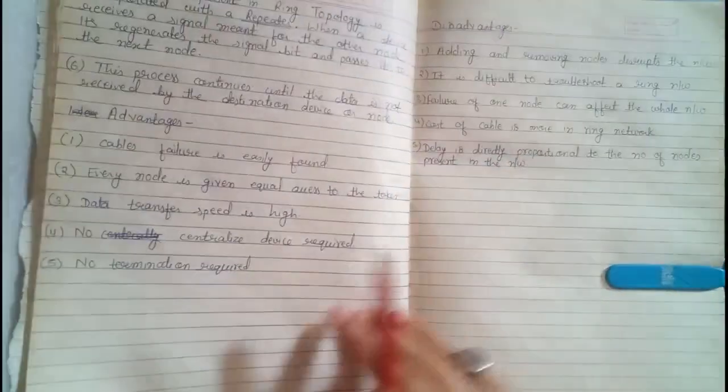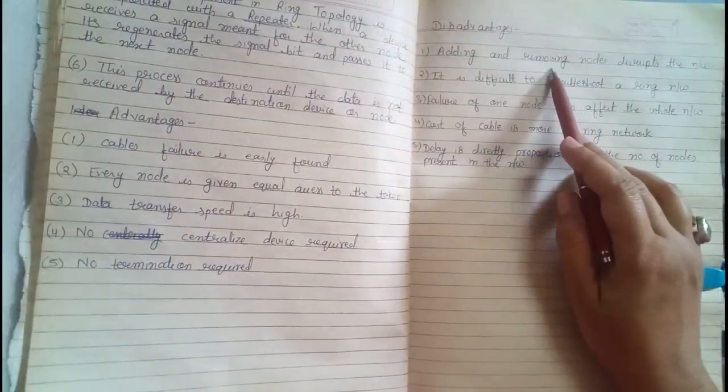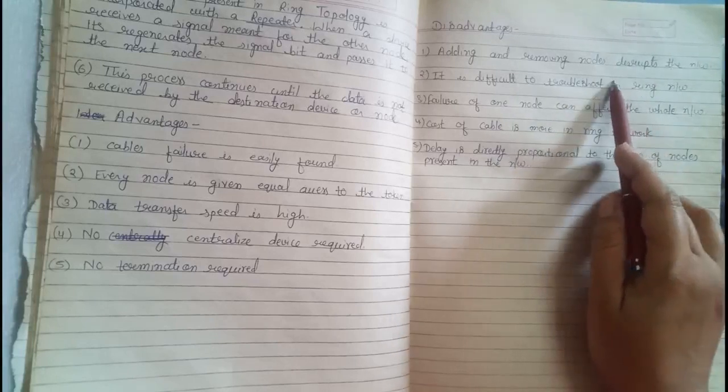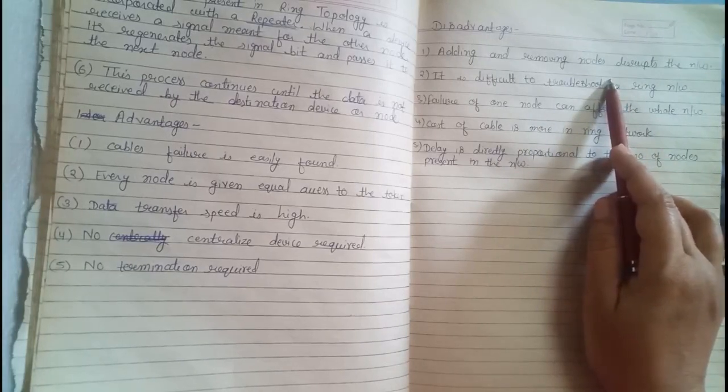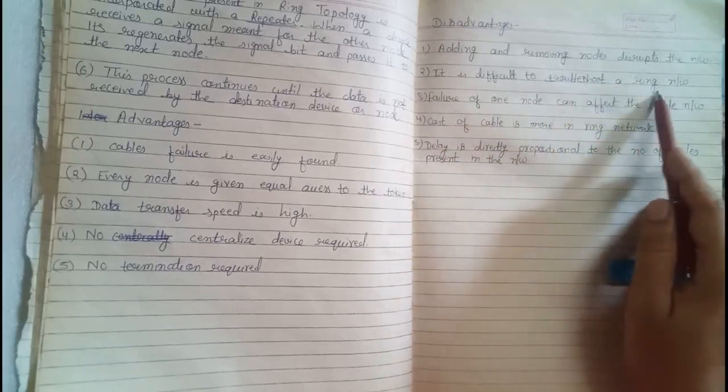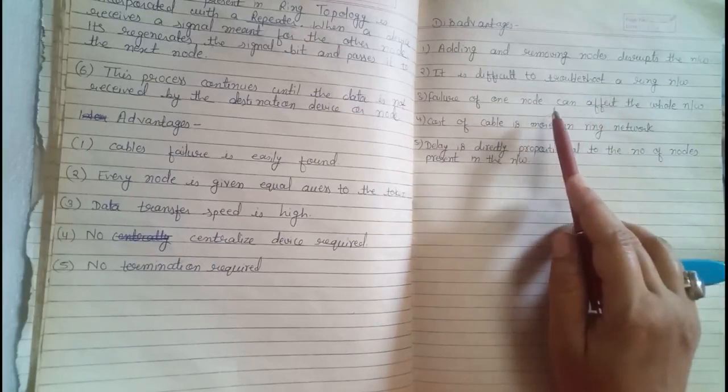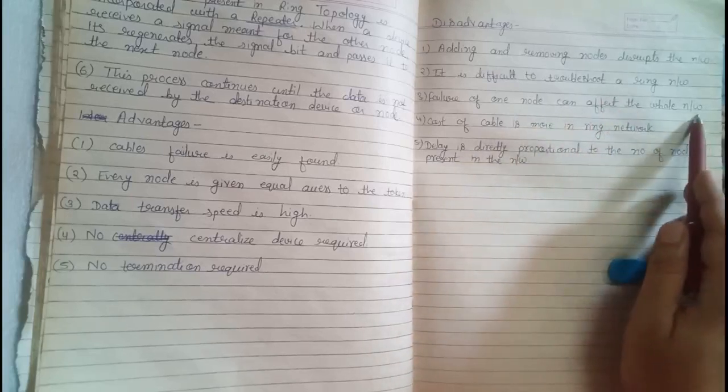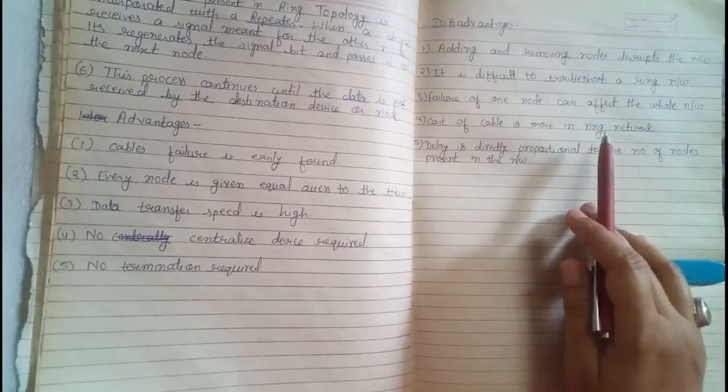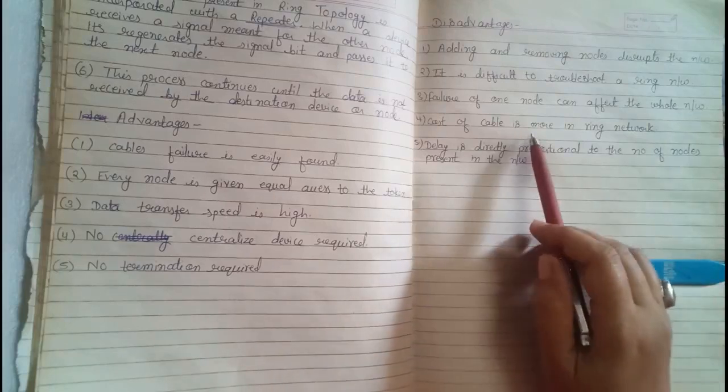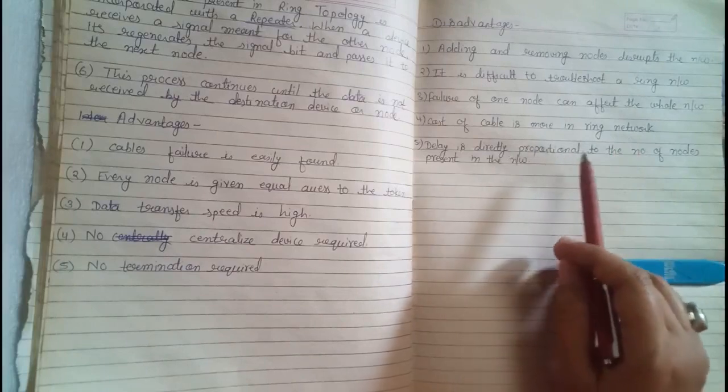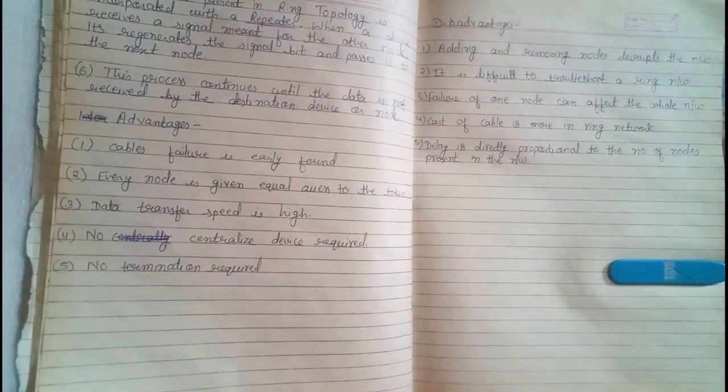Now, see disadvantage of ring topology. Adding and removing nodes disrupts the network. If you want to add new PC in a working condition of ring topology. At that time, you have to stop topology. Then add new PC. Second point. It is difficult to troubleshoot a ring network. Sometimes very difficult to troubleshoot a ring network. Failure of one node can affect the whole network. Because this network works in a series manner. So, if any node is failure in between any two nodes. So, it will affect the whole network. And all network will be down. Cost of cable is more in ring network. Delay is directly proportional to the number of nodes present in the network. If number of nodes are increased. Then delay will be increased.